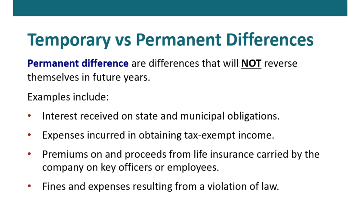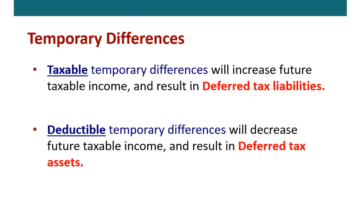Permanent differences, on the other hand, are differences that will not reverse themselves in future years. Examples include interest received on state municipal obligations, expenses incurred obtaining tax-exempt income, premiums and proceeds on life insurance carried by the company on key officers or employees, and fines and expenses resulting from a violation of law. None of these are deductible for tax purposes, but we do record them as expenses on our financial statements. It's the temporary differences that give rise to deferred tax assets and deferred tax liabilities.